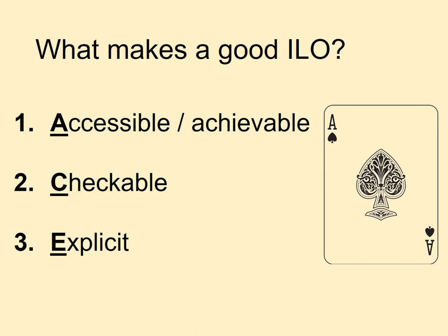Point two: checkable. Will you and your students be able to evaluate whether they have achieved the ILO? The ILO needs to be articulated in such a way that you're describing something observable and measurable. For example, rather than saying that you expect students to know a particular thing, perhaps you should say that you want them to define or list examples of that thing.